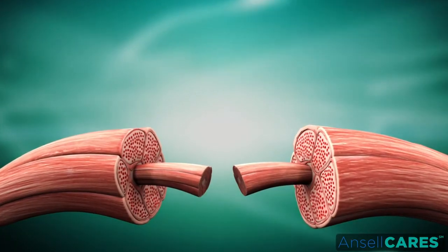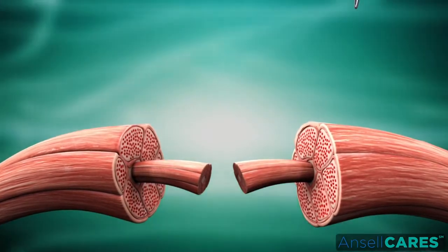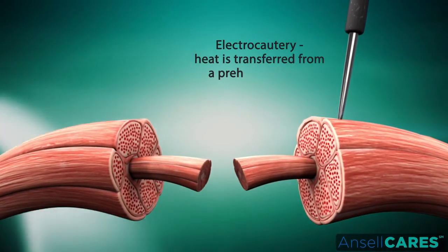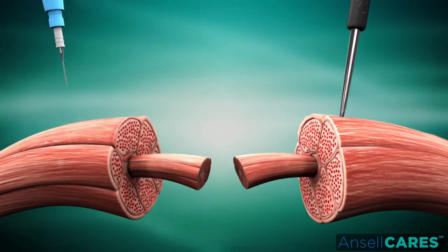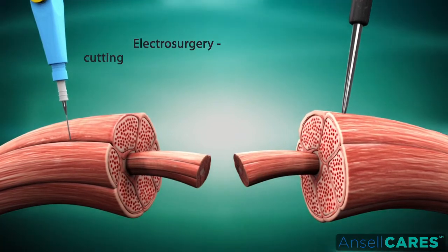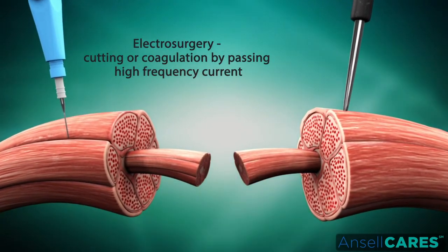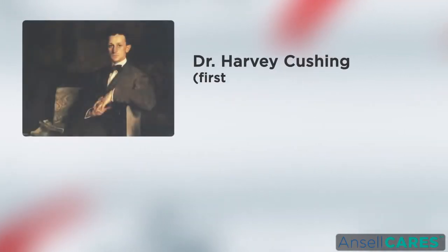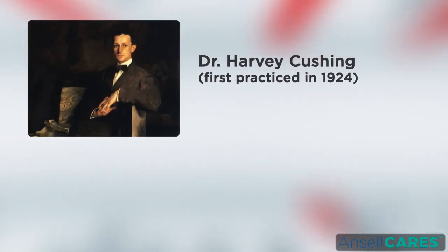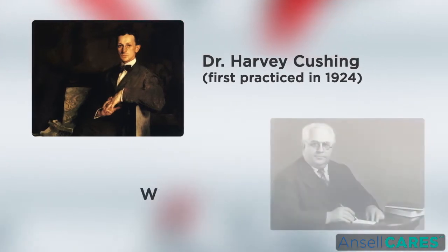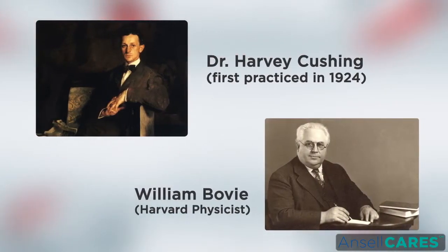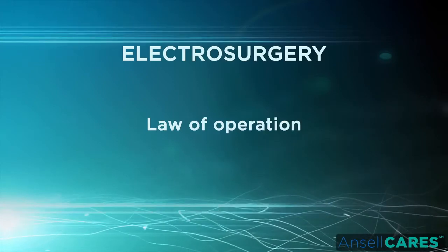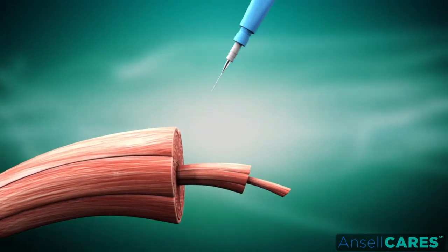Heat was transferred to tissues by contact with the red hot wire. All of these early applications were examples of electrocautery, however not true electrosurgery. In electrocautery, heat is transferred to tissue from a preheated object; the current heats only the electrode and does not pass through the patient's body. True electrosurgery involves the cutting or coagulation of tissues by passing a high frequency current through the target tissue. It was first practiced in 1924 by Dr. Harvey Cushing, a famous neurosurgeon, who enlisted the help of William Bovie, a Harvard physicist — and ever since, Bovie's name has become synonymous with electrosurgical units.